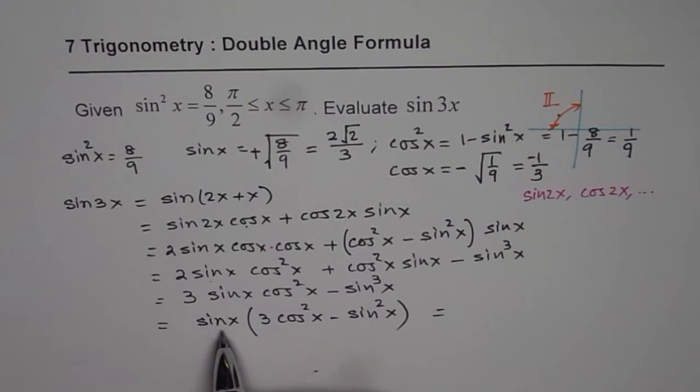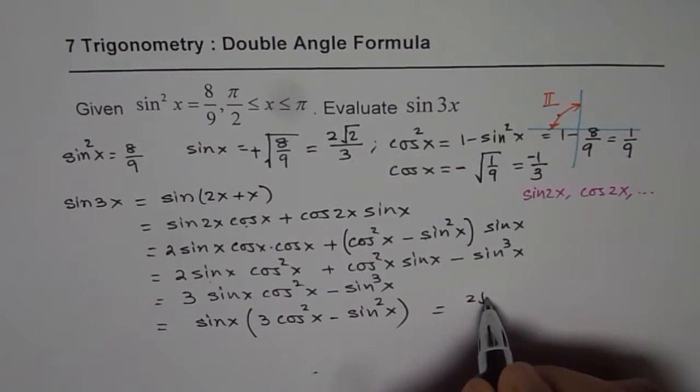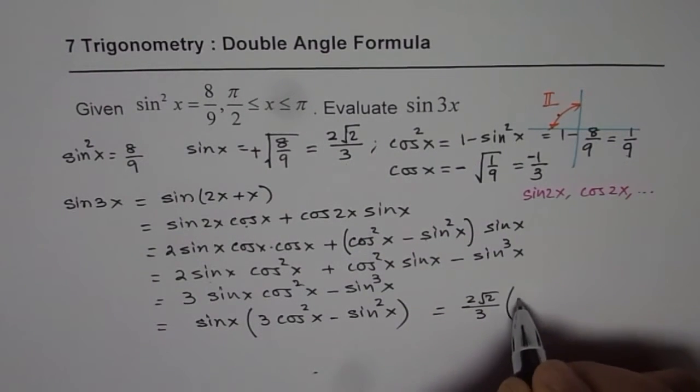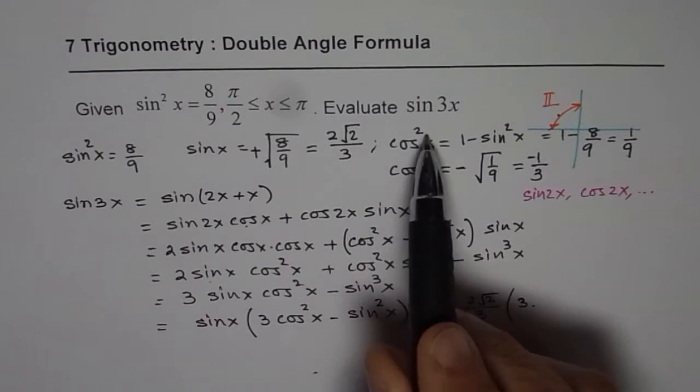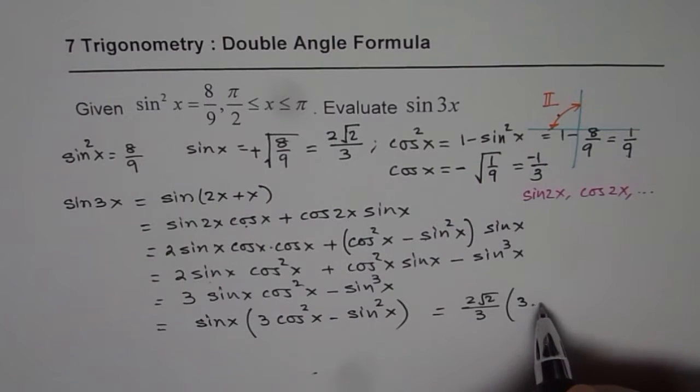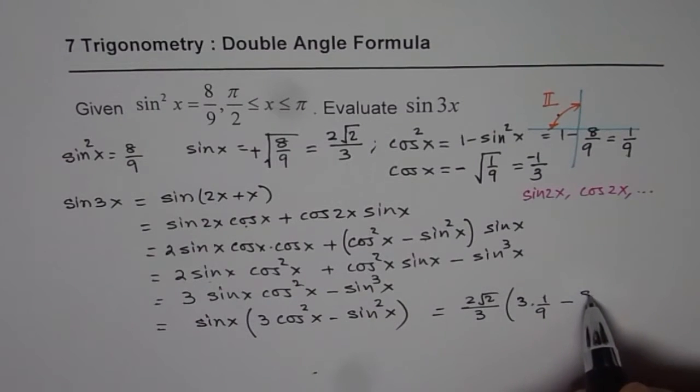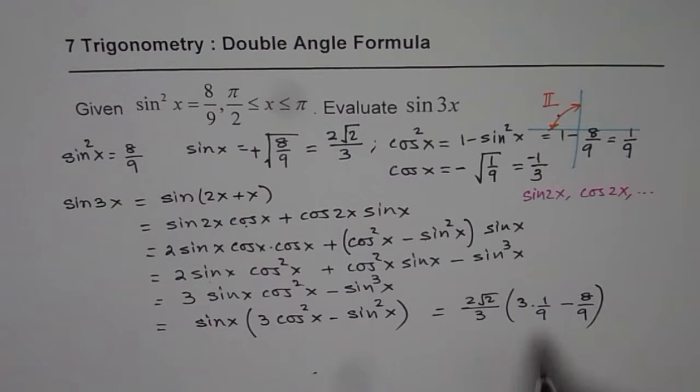So what we get here is, sin x for us is 2√2/3, times 3 times cos²x is 1/9. Cos²x is 1/9. So 3 times 1/9 minus sin²x is 8/9.